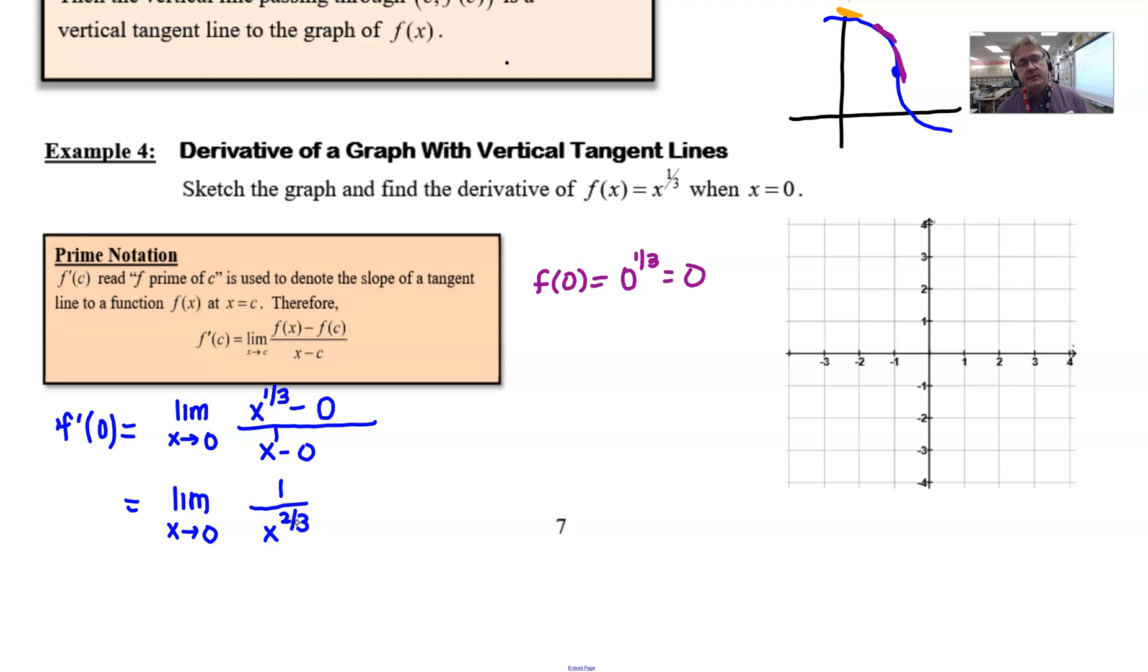Because that exponent is negative, we're going to allow that term to reside in the denominator with a positive exponent, so we would have 1 over x to the two-thirds. As this x gets very small, we end up having a very small denominator, because if you take a small number and take the cube root of it, it's just going to get smaller still. If you square a small number, it actually still gets smaller—a number between zero and one squared gets smaller.